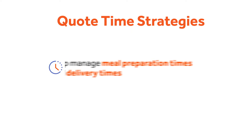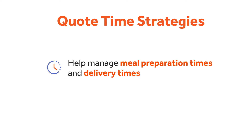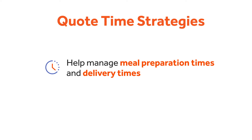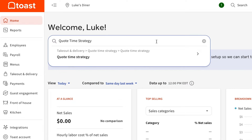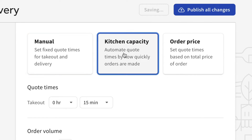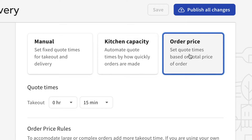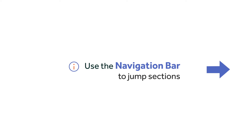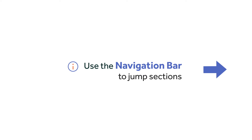Toast has simplified the process of managing meal preparation times and delivery times in ToastWeb. You can now choose to adjust quote times using one of three quote time strategies: manual, kitchen capacity, or order price. We'll first go over each strategy, then you can use the navigation bar to select the option you'd like to use and begin configuring it in ToastWeb.